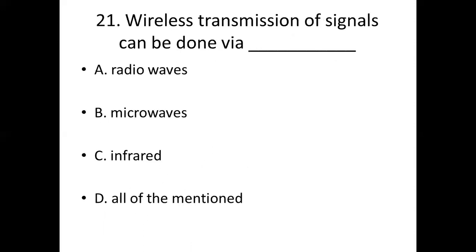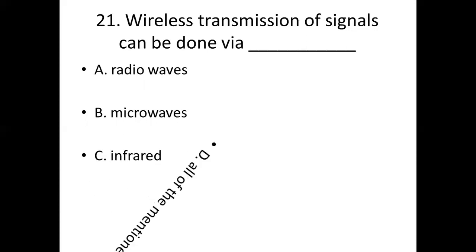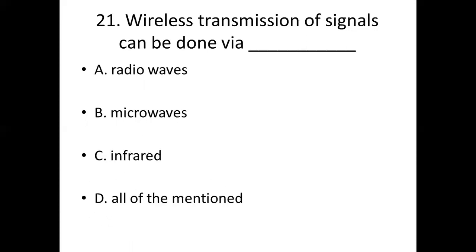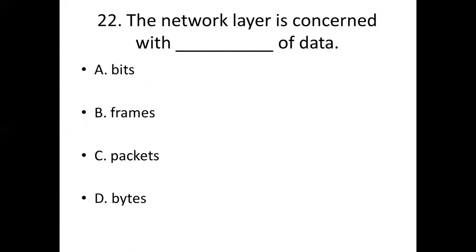Question 21: Wireless transmission of signals can be done via dash. Option A: radio waves. Option B: microwaves. Option C: infrared. Option D: all of the mentioned. Answer: Option D, all of the mentioned.